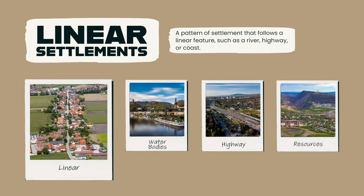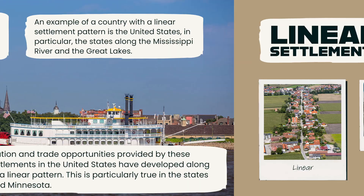Pattern number three is linear settlement. Linear settlement refers to a pattern of settlement that follows a linear feature such as a river, a highway, or a coastline. Linear settlement patterns can be found in a variety of contexts and can be shaped by factors such as transportation networks, economic opportunities, and natural resources.